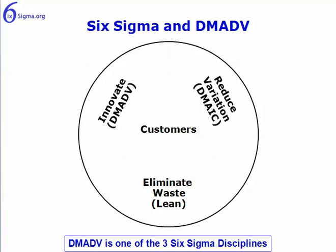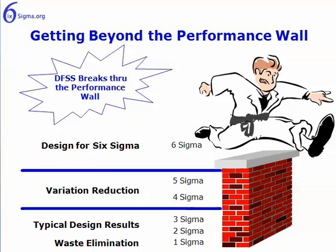Recall from the first module that DMADV is really used in two distinctly different scenarios. The first is when we've got a brand new product or service required — then we employ the DMADV methodology. The second use is when we've got Lean or variation reduction techniques where we haven't improved the process to expected performance levels and so we need to employ the DMADV methodology.